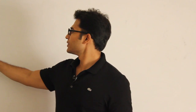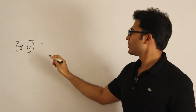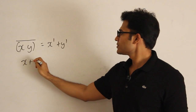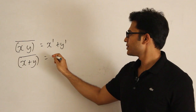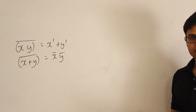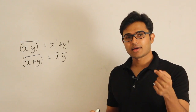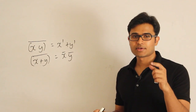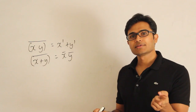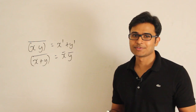De Morgan's law states that (xy)' equals x' + y', and (x + y)' equals x'y'. In other words, De Morgan's law says: take a switching expression and convert every literal to its complement, replace plus with dot, dot with plus, zero with one, and one with zero.